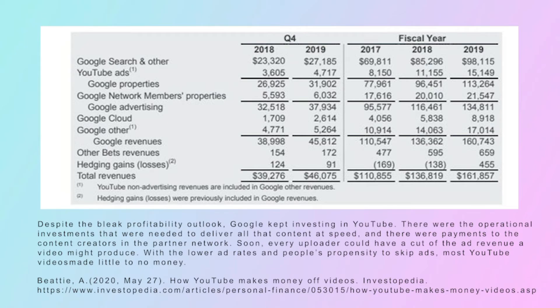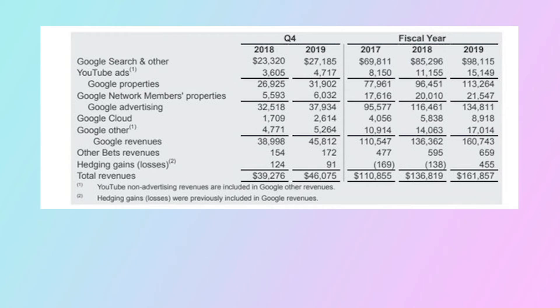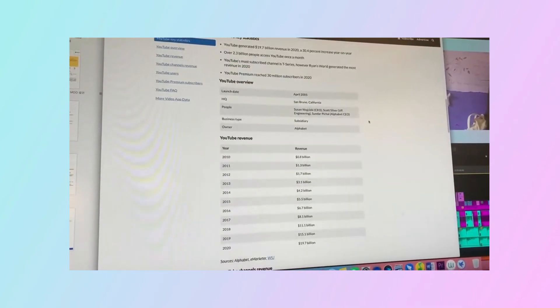Despite tens of billions in advertising revenue, YouTube is breaking even, just like many comprehensive platforms. However, YouTube is definitely not in trouble. According to Andrew B's article on how YouTube makes money off videos, the top line revenue is high while the bottom line might still be zero, but strong growth potential remains. For YouTube and its parent company Google, user data on YouTube is important — the longer users stay, the more data is acquired. This data is valuable for analyzing user behaviors for online marketing, and Google can afford to be patient as YouTube figures out more profit models in the future.